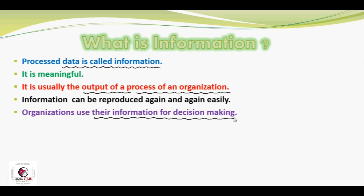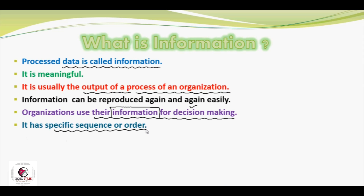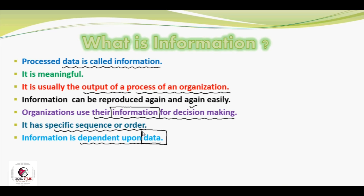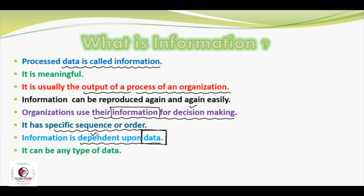Whenever data changes, we can reprocess it to get new information. Organizations use their information for decision making, and because our information is in meaningful form, it can be used for decision making. It has a specific sequence or order because it is in meaningful form, so whatever the output is, it will be in some sequence or order that is meaningful to the users. Information is dependent upon data — remember that to generate information we need data. Until we have data, we cannot make information by processing it.